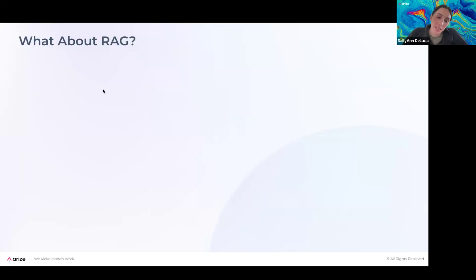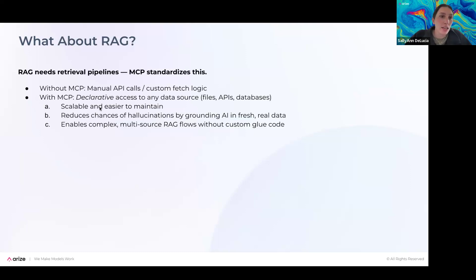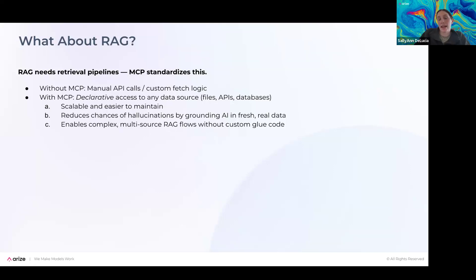What about RAG? Similar to tool calling, RAG needs a retrieval pipeline, and MCP is going to standardize it. Without it, there are all these manual calls; with it, you have declarative access to any file source — scalable and easier to maintain. It can reduce the chances of hallucination by just adding RAG to begin with, and it enables more complex multi-source RAG flows without extremely custom glue code to keep it together.